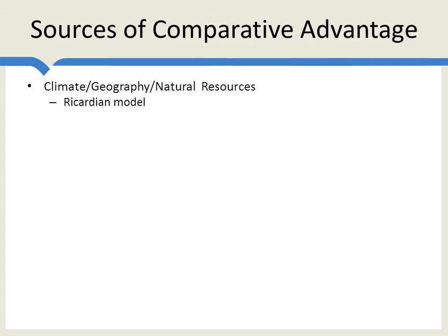The most obvious differences are those associated with climate, geography, or natural resources. And indeed, this is how Ricardo first phrased the comparative advantage model in terms of wine and cloth, with Portugal being better at producing wine and England having a comparative advantage in producing cloth. So when we're thinking about agriculture, mining, or tourism, these differences in climate can create differences in comparative advantage.